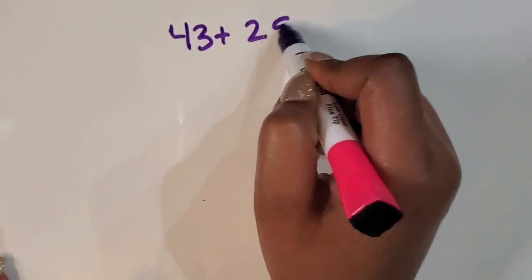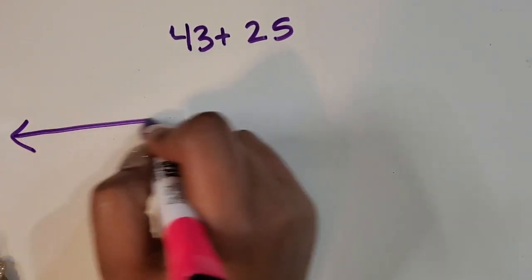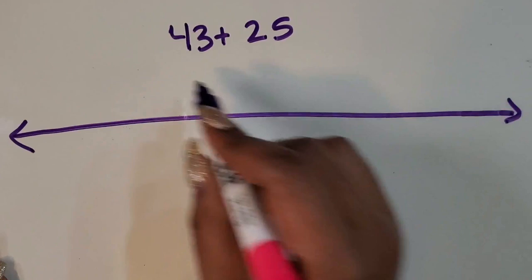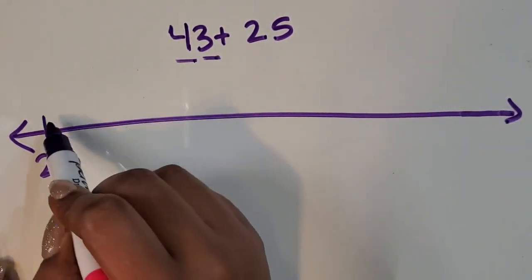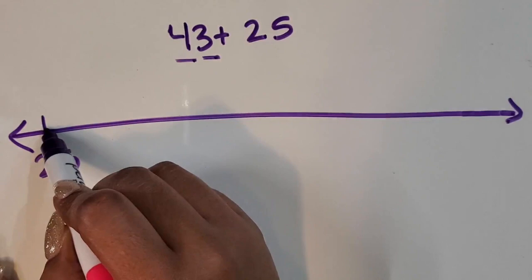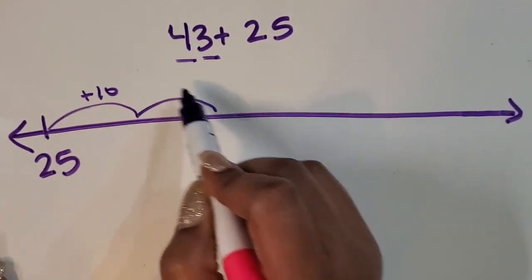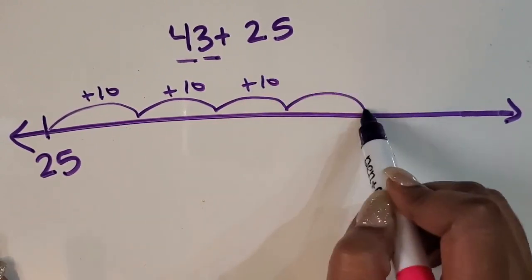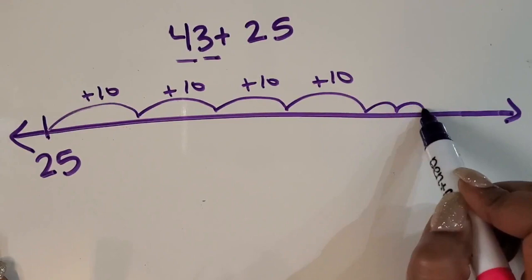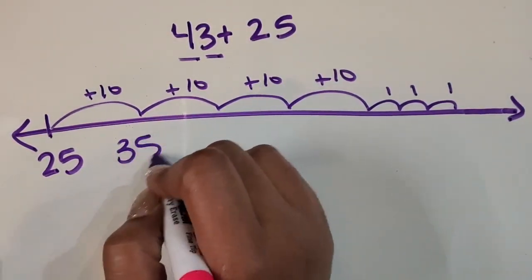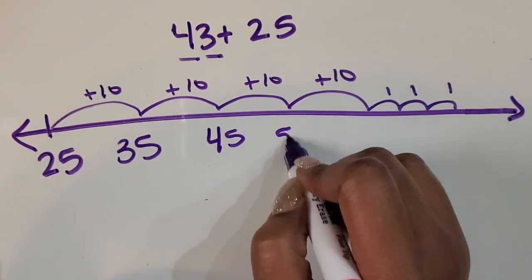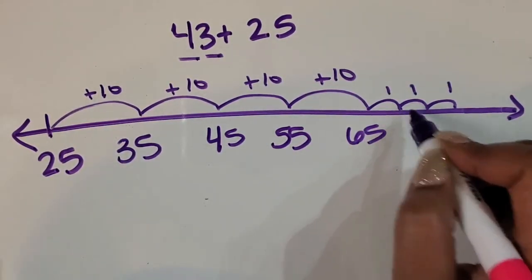I'll show you another way to add 43 and 25. You don't have to start with the higher number when adding — you can start with the lower number if you choose to. This time I'm going to start with 25 and add four tens and three ones, breaking up the 40 into four 10s. So 25 plus 10 is 35, plus 10 is 45, plus 10 is 55, plus 10 is 65, then 66, 67, 68.